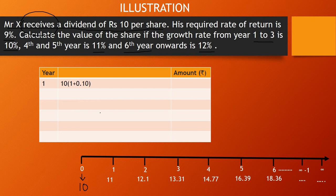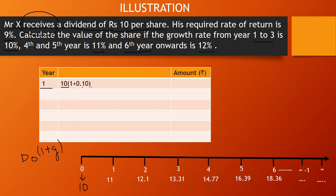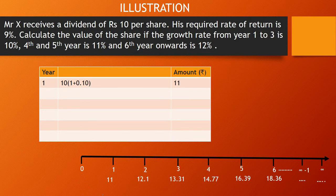We have already learned how dividend is calculated for different years. To calculate D1, the formula is D1 = D0 × (1 + g), where g is the growth rate. So D0 is 10 and the growth rate is 10 percent, written as 0.10. Therefore D1 = 10 × (1 + 0.10) = 11. So D1 equals rupees 11.